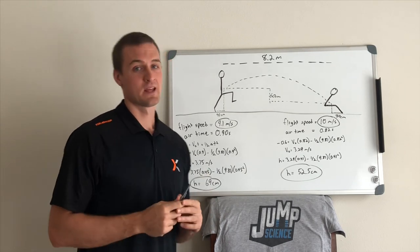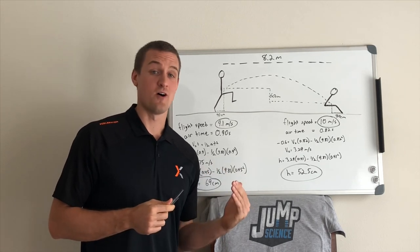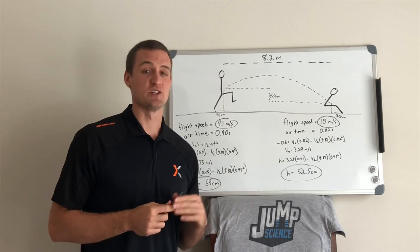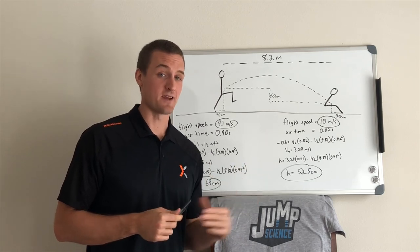So if we look at Usain Bolt, the guy was almost 2 meters tall, and in his prime, he sprinted 12.3 meters per second. Bolt could have been a 9-meter long jumper.